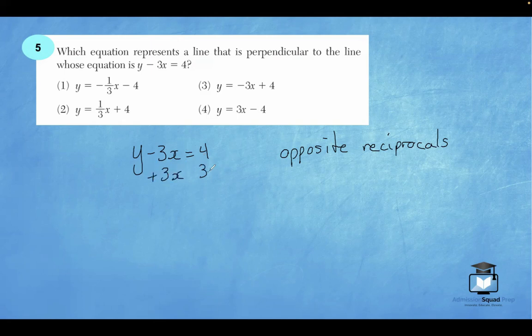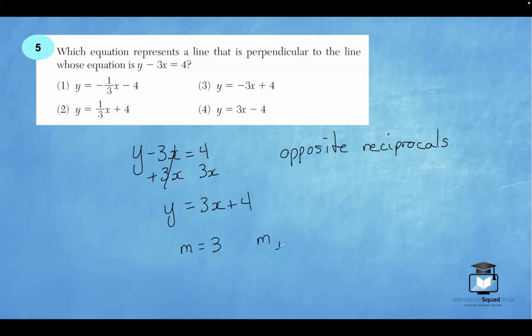So let's first rewrite the original equation in slope intercept form. So I'm going to add 3x to both sides. Now we have y equals 3x plus 4. Since the slope m of the original equation is 3, the slope of the perpendicular line will be negative one third. Again, we can express 3 as a fraction. So your first step is to find the reciprocal of 3 over 1, which is 1 over 3. And then step 2 is to simply find the opposite sign. Since 3 is positive, the slope of the perpendicular line is going to be negative. So we're looking for an equation with a slope of negative one third. So answer choice 1 is the correct answer.